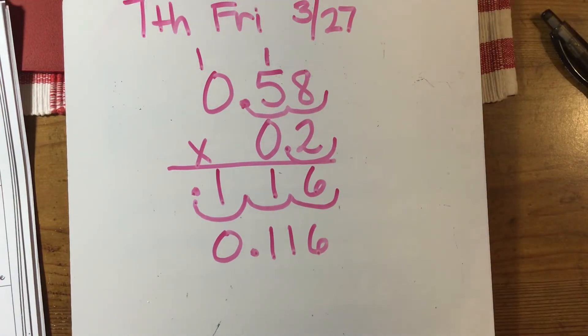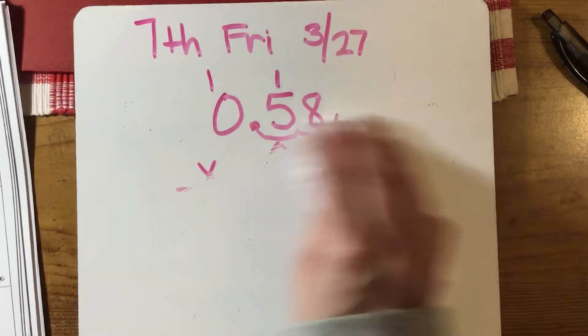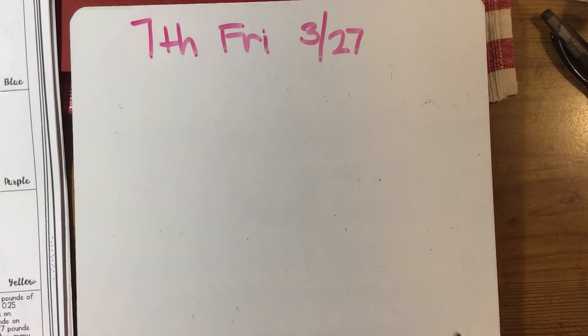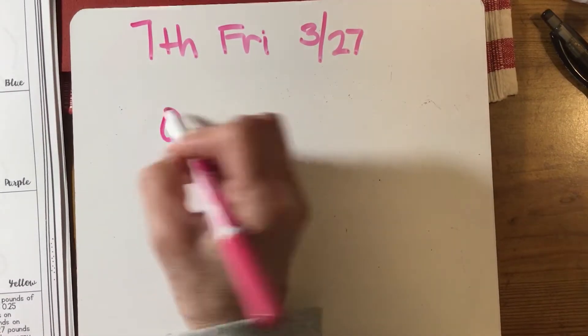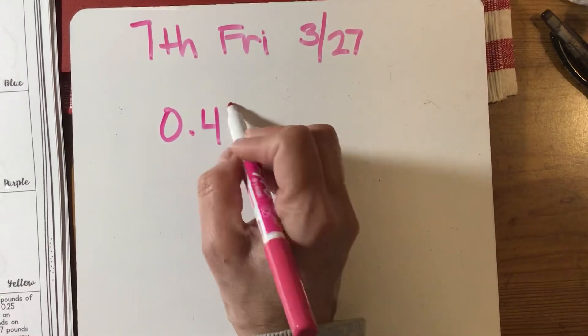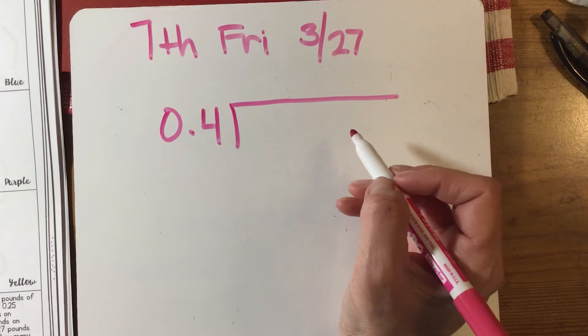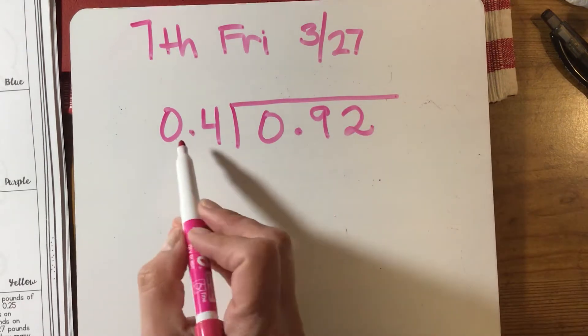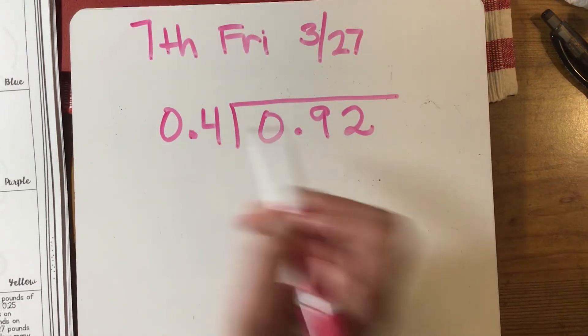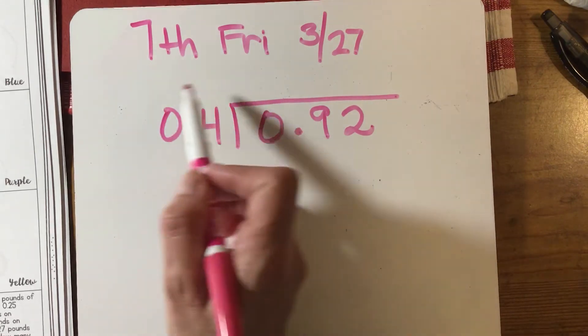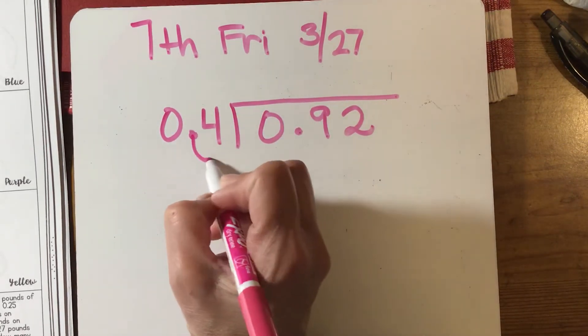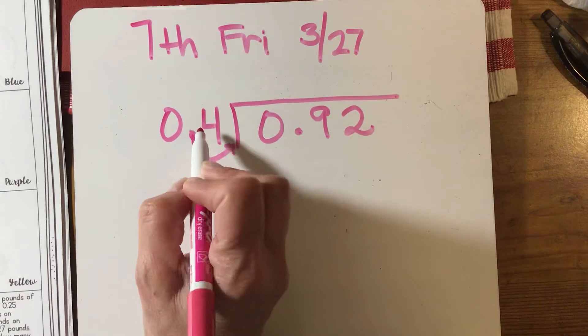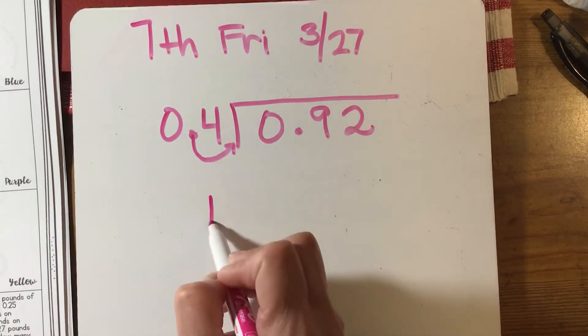That's multiplying. Now division can be a little trickier. I'm going to do number seven on your packet, page nine: 0.92 divided by 0.4. You cannot do division with a decimal on the outside—this is called your divisor. You've got to move that decimal. In order to get rid of it, I'm going to move it once to the right. If the decimal was here, I would have to move it twice to the right. So my new divisor is simply four.